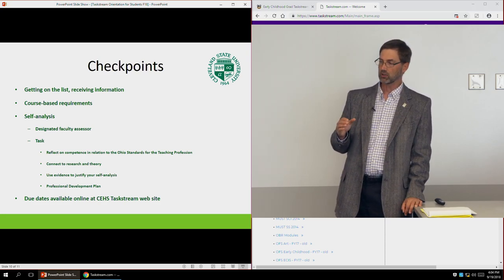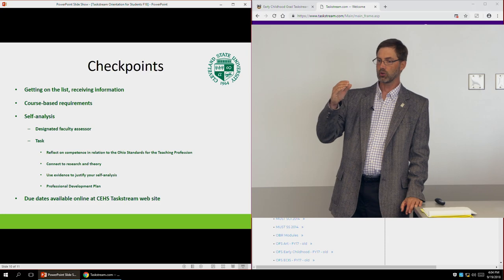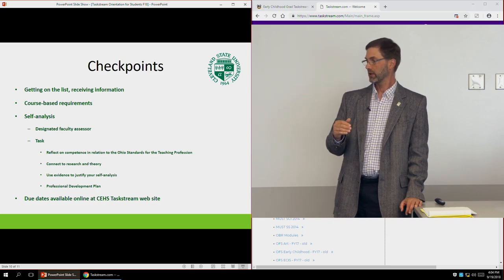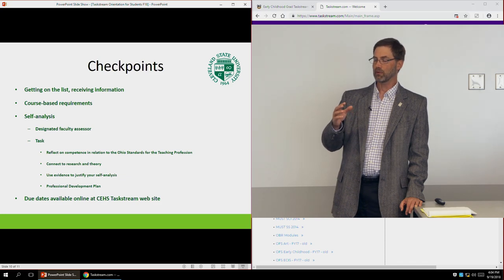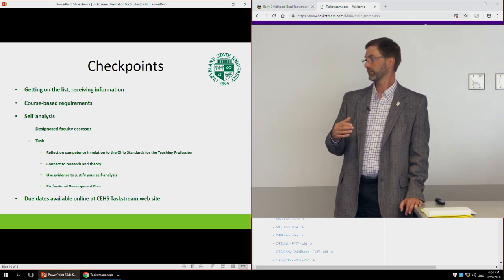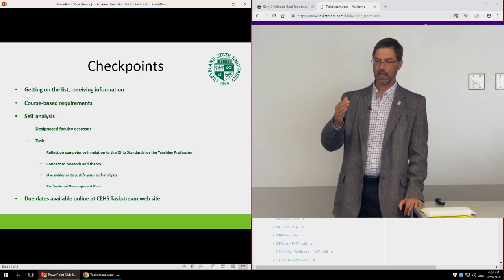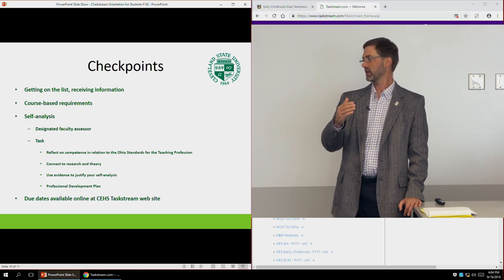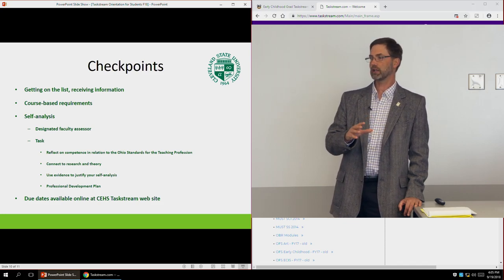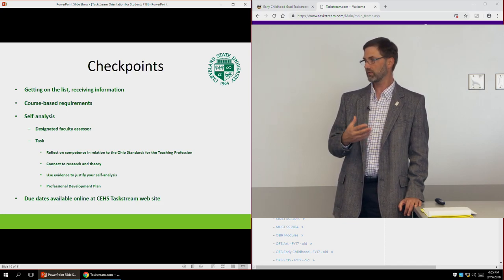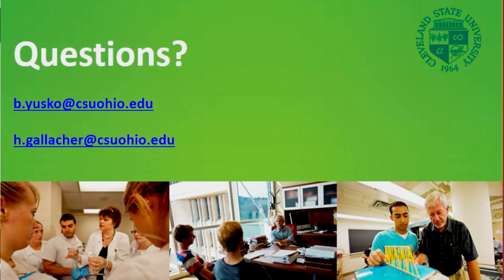The due dates for the self-analysis are listed on the Taskstream website I mentioned earlier. Generally, they are due around the end of October for fall checkpoints and around the end of March for spring checkpoints. You'll submit them to your designated checkpoint assessor, and they will be assessed within a two-week time frame. If there's a problem, it'll be sent back to you for resubmission — we usually allow at least one revision for every student. If you have any questions, feel free to contact me or Heather by email, and hopefully this has been of some value to you.